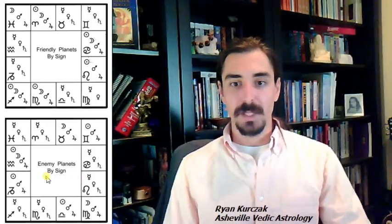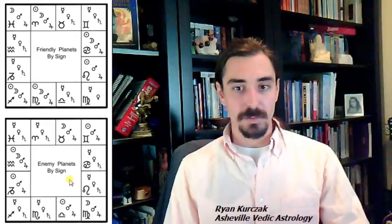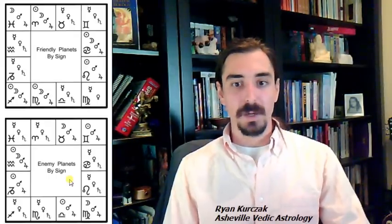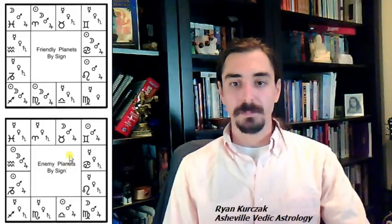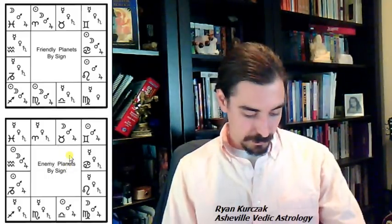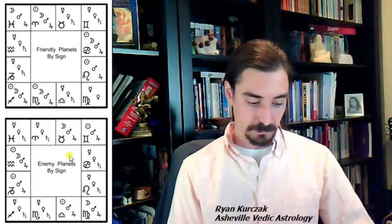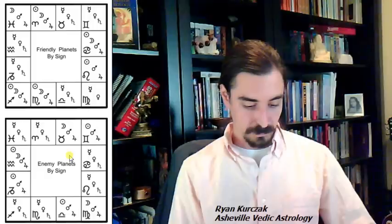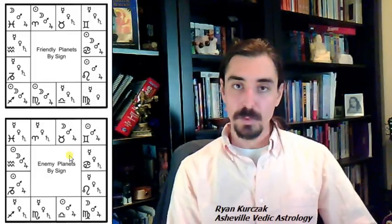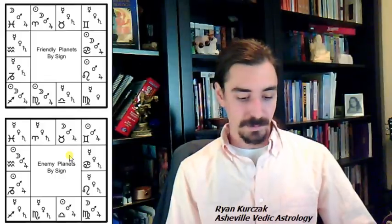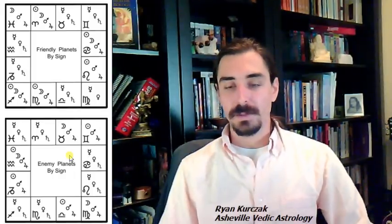And these planets, enemy planets by sign down here in the bottom, are going to be planets that on some level are going to get in the way of those goals. We're not going to go through them all. You can pause this video and study this chart. Or you can get the book The Art and Science of Vedic Astrology. I forget what chapter I got this from. Let's see. I believe it was chapter 9. Yeah, The Art and Science of Vedic Astrology, chapter 9, the very end on page 109. This chart is there. And the whole chapter speaks to this. So you can get that and study it.